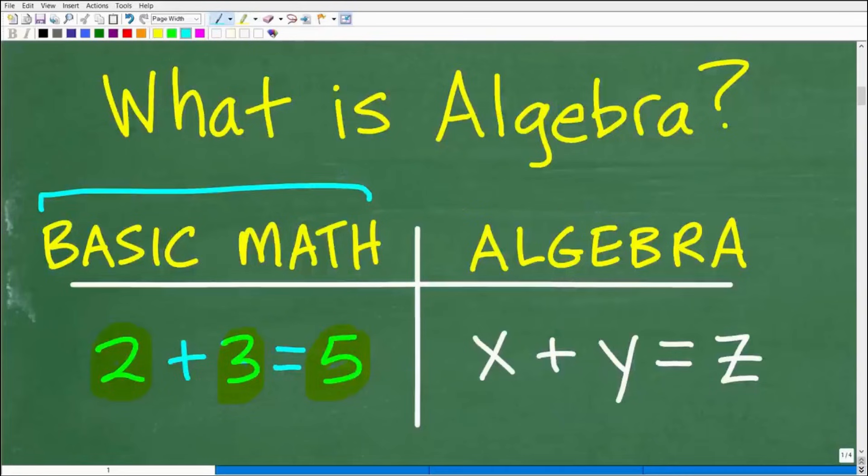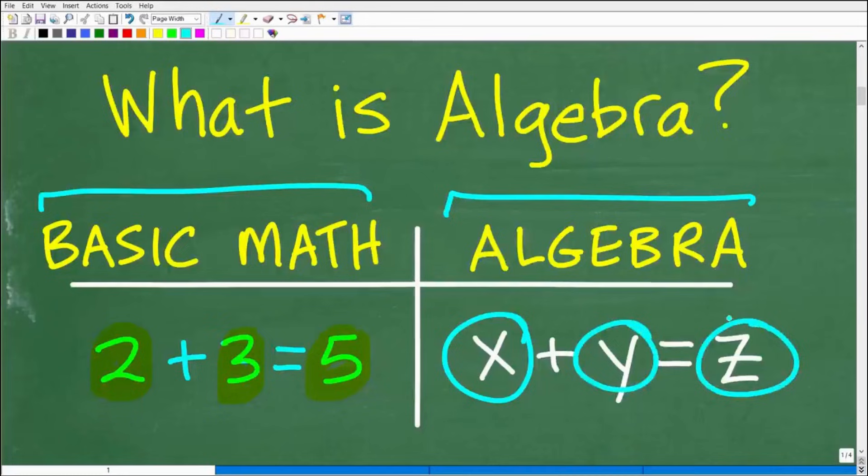But when you finish with basic math and you start progressing into more advanced math, typically like in middle school, certainly in high school, you get into algebra. So this is an example of algebra: x+y=z. If we just look here, what's the difference? Well, algebra, we use these symbols. We have letters and these letters and other type of symbols are called variables. So this is just a quick comparison of what algebra is and how it's different from basic math.